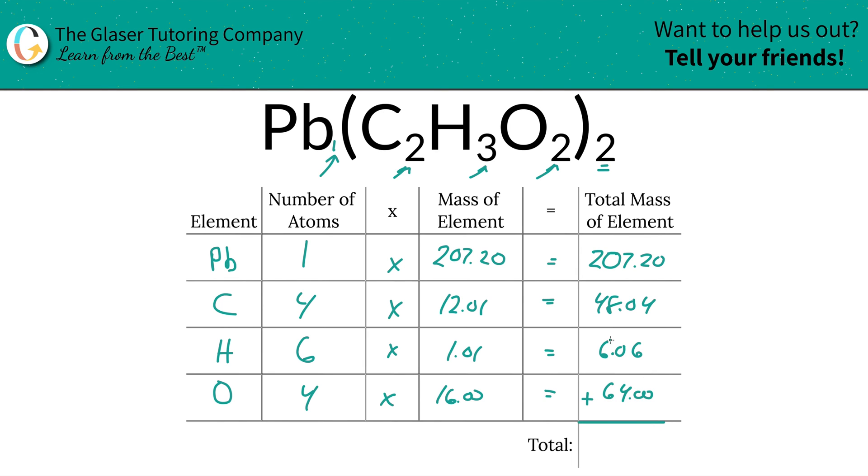Then the total mass of the compound now, easy as pi. Just simply multiply this on up the column. That's it. So this is 325.30. And the units there are AMU, atomic mass unit. Those are the units for molecular mass.